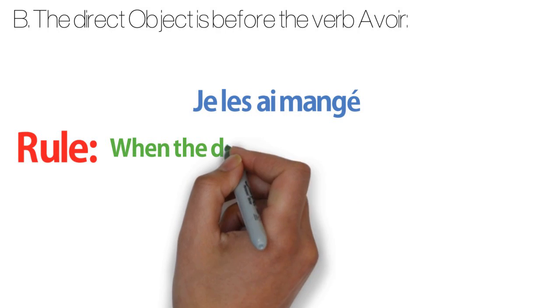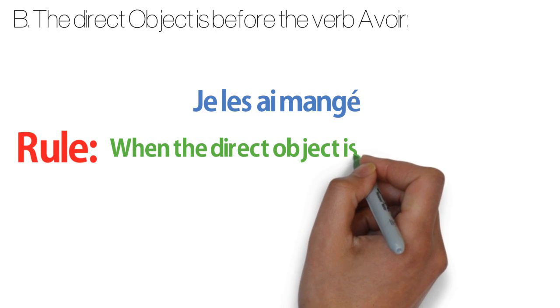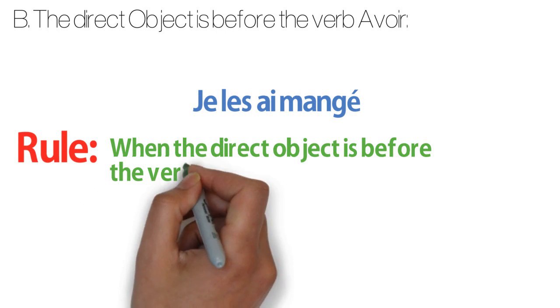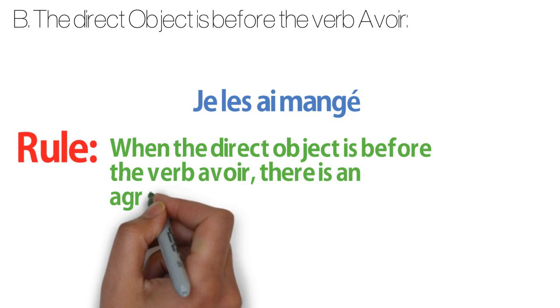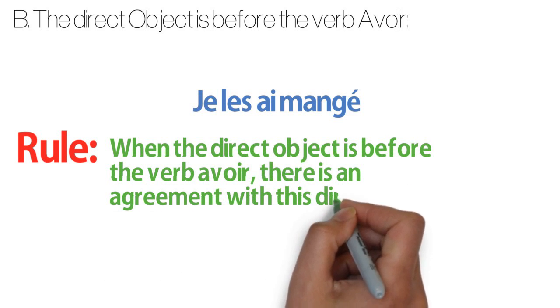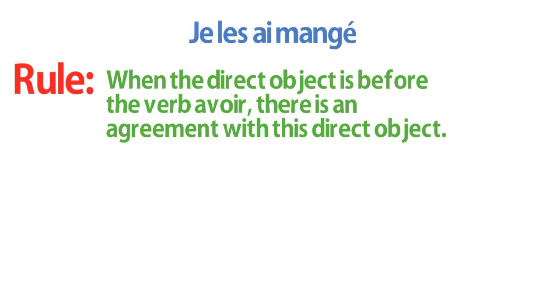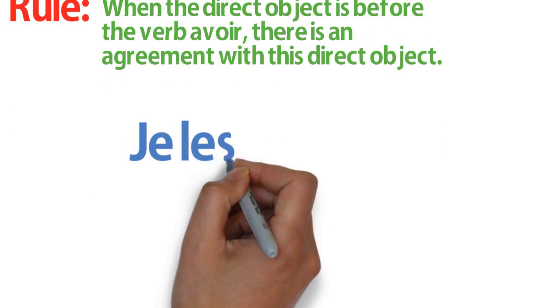The rule is, when the direct object is before the verb avoir, in this case, there is an agreement between this direct object and the past participle and not with the subject of the sentence.